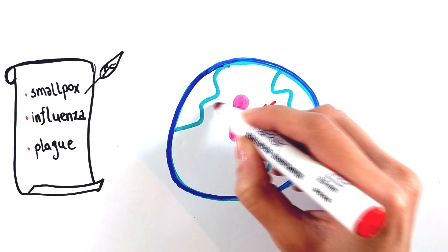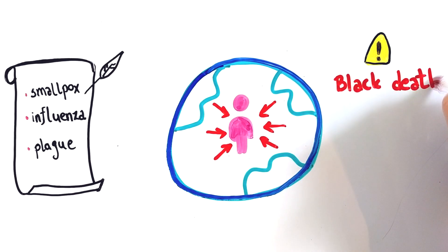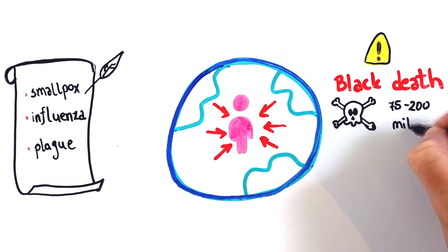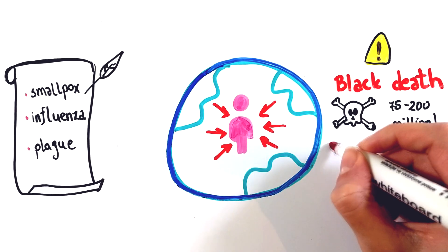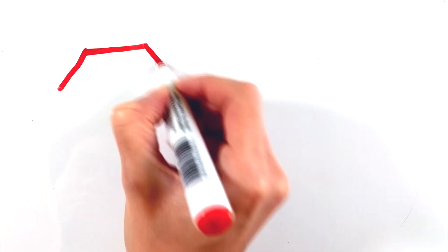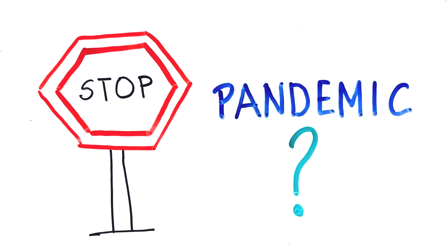The consequences of a pandemic can significantly change the world and affect its population. One of the most devastating pandemics was the Black Death from 1331 to 1353, which killed an estimated 75 to 200 million people and wiped out nearly half of Europe's population. But how did we survive and how were pandemics actually stopped?